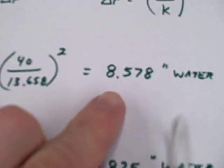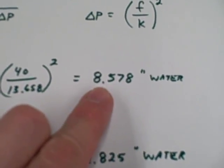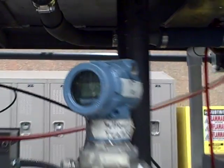Notice that we calculated 8.578, so we're awfully close to our predicted measurement. 8.578 inches of water calculated and about 8.6 inches of water here.